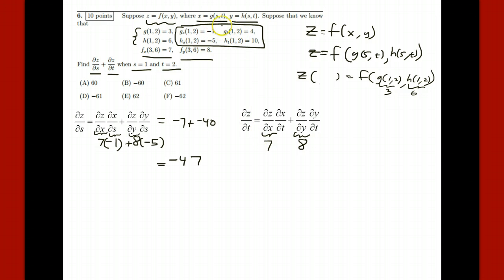So x is g. This gives us x with respect to t. That's a 4. This gives us y with respect to t, which is h here. That's a 10. So that's going to be your 28 and your 80 or your 108.